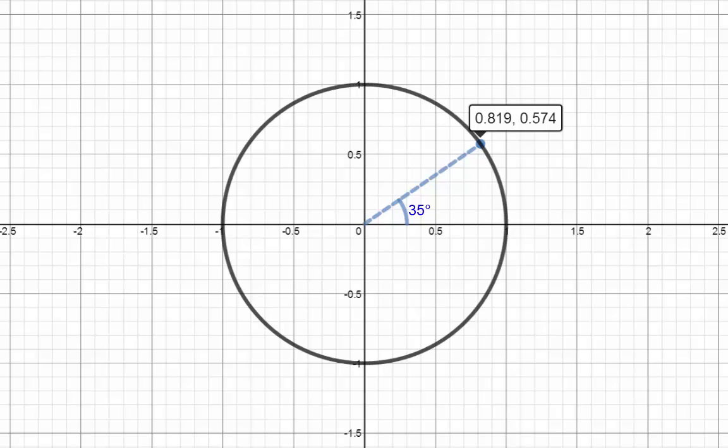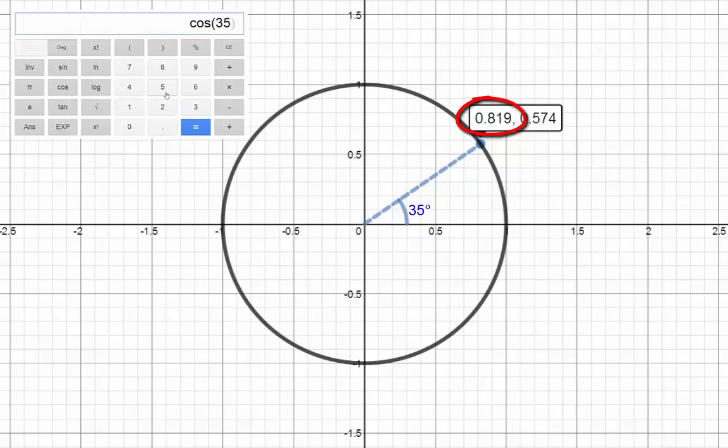You've probably seen cos and sin on calculators before, so let's check that cos of 35 degrees is indeed 0.819. The calculator has some extra decimal places, but you can see that it's the same when rounded. And let's also check what sin 35 degrees is.